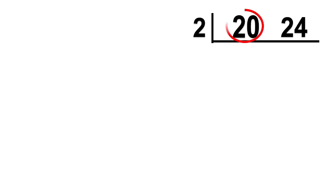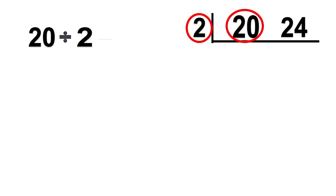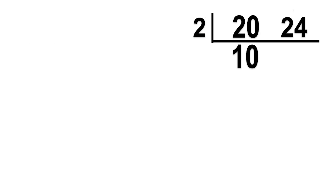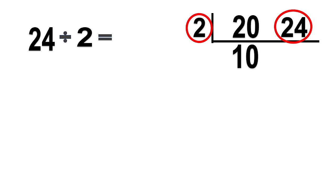Then, let's proceed with division. 20 divided by 2 equals 10. Let's write the quotient below the number. Next, 24 divided by 2 equals 12. The remaining numbers are 10 and 12.